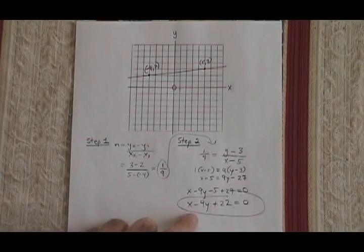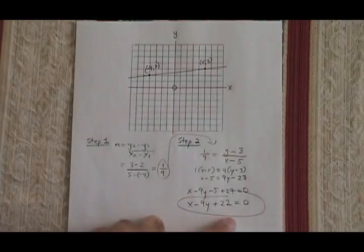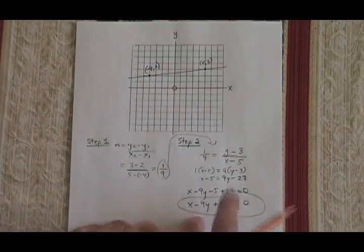It is a valid form, ax plus by plus c equals 0, and it gives the equation for this line.